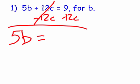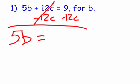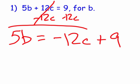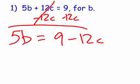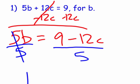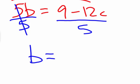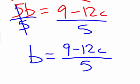So I'm left with 5b equals 9 minus 12c. I can't combine 9 and 12c because they're unlike terms — one has a c and the other is a constant. Usually people write the variables first, but it doesn't matter. Now to get b by itself, I divide both sides by 5, the fives cancel, and b equals (9 minus 12c) over 5. I'm done — I solved for b.